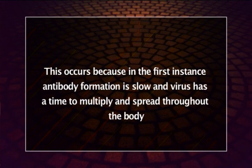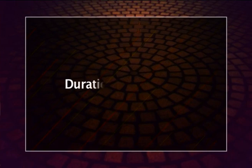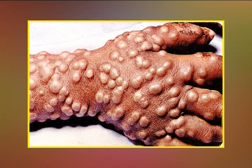This occurs because during the first infection, antibody formation is slow — the virus has time to multiply and spread throughout the body, so the disease appears. Eventually antibody formation picks up and the disease disappears. The cells capable of producing antibodies persist in the body as memory cells for a long time, possibly for life. On further infection they quickly become active and produce the same type of antibodies, rapidly overcoming the infection.